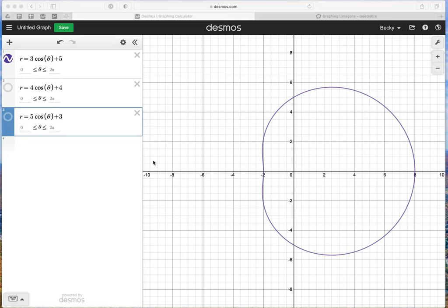We're going to do the exploration in Unit 4, Day 3 notes about Limassons, and we're going to do the portion where we are making some predictions. I've gone to Desmos.com and opened a new graphs page, and I have entered the three graphs that we just sketched.